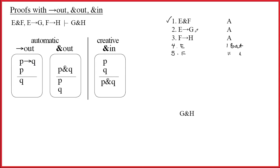There it is. I found E. Therefore, I can write G. And the justification? Well, this involved two lines. Two and four. So that's what I'll write. Two comma four, arrow out.